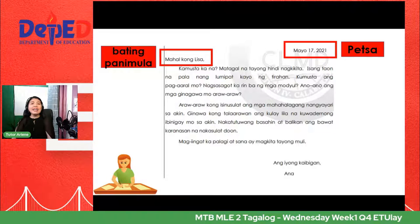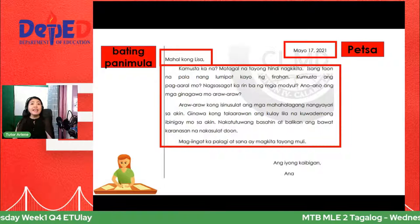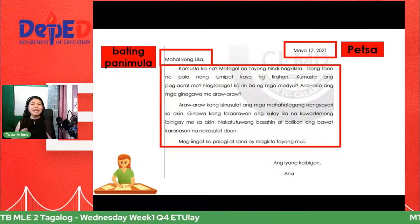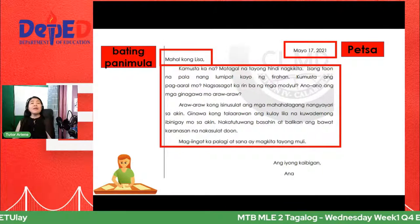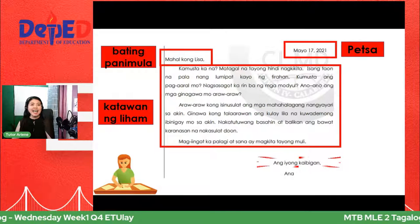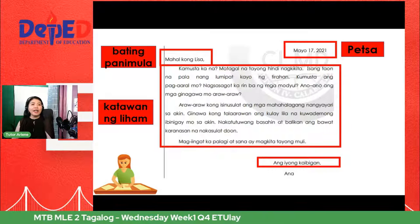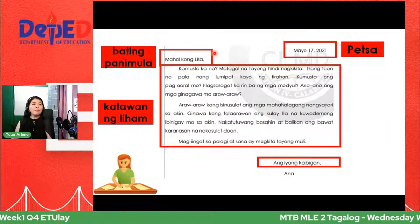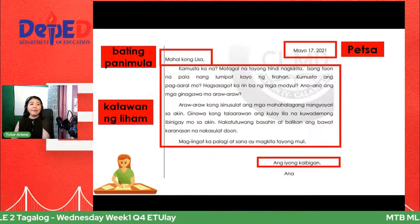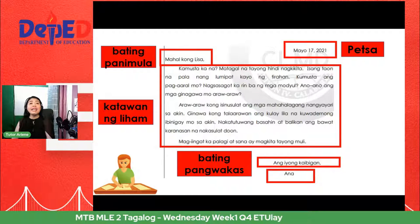At ang malaking bahagi ng ating liham — diyan natin isinusulat ang mensahe na nais mong sabihin sa kung sino yung iyong sinusulatan. Dyan magkukwento ka na — una, kukumustahin mo muna siya, magkukwento ka kung ano ba yung mga exciting moments sa iyong buhay. Minsan ang kinukwento natin ay masaya, minsan ay malungkot na pangyayari. At mayroon din tayong lagda — yun ang katawan ng liham, yung malaking bahagi ng parte ng ating liham. At ito naman ay bating pangwakas — isinasaad sa bahaging ito ang huling pagbati ng sumulat o relasyon. Dito naman isinusulat ang pangalan ng nagpadala ng liham — ibig sabihin, ito ay lagda.